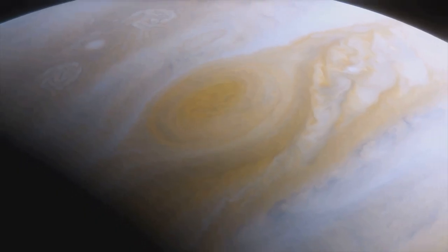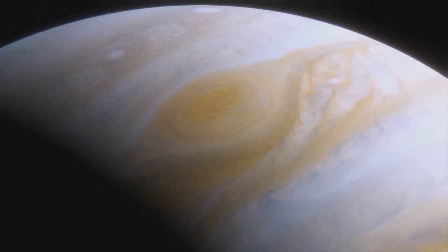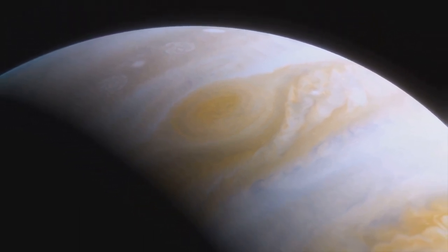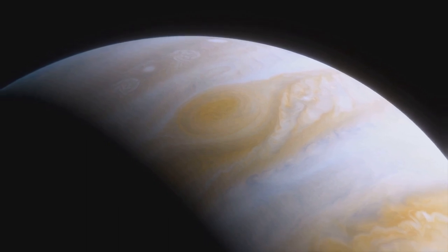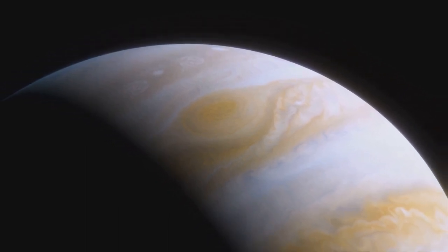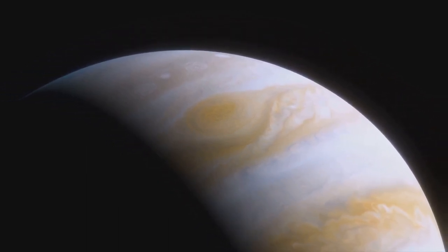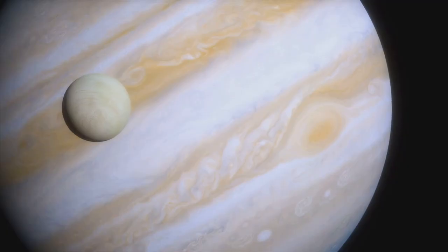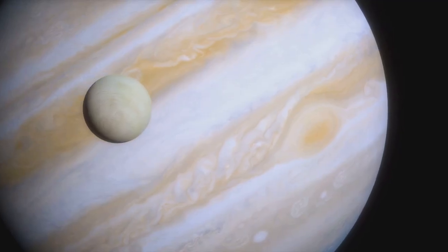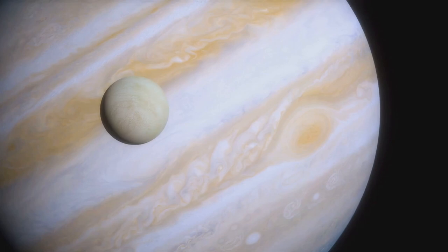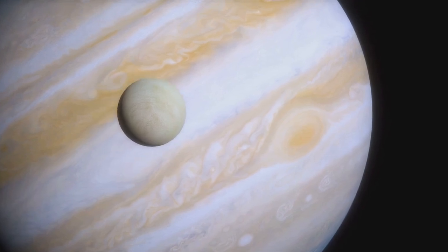Farther out, the landscape of our solar system changes dramatically. Here lie the four gas giants: Jupiter, Saturn, Uranus and Neptune. These outer worlds are enormous spheres composed largely of hydrogen and helium, each surrounded by a system of rings and moons. Jupiter, the largest, boasts over 70 moons, including Ganymede, the largest moon in the solar system.